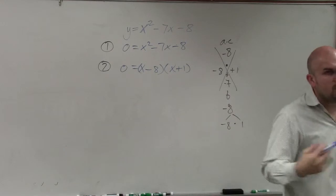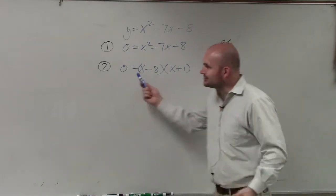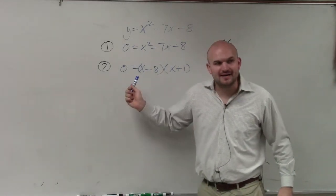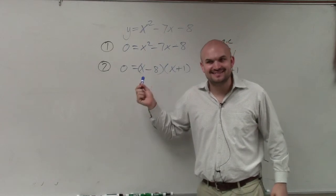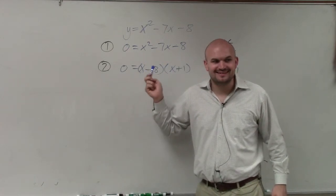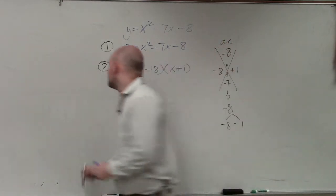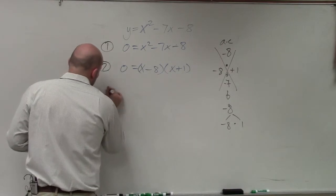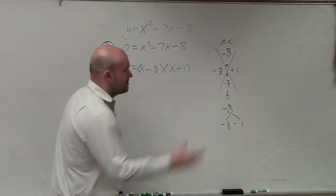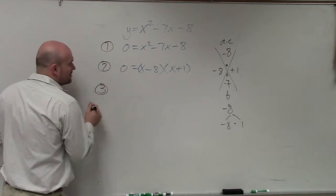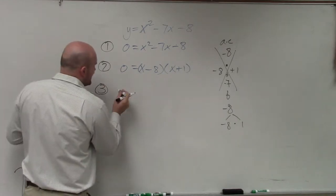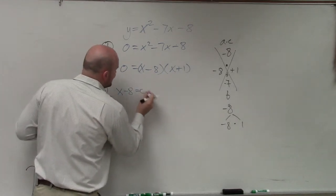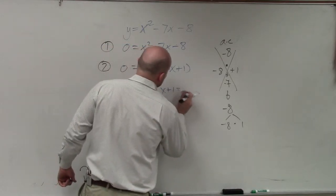And the reason why factoring was so important is because now, once it's factored, we can now apply the zero product property. So step three, step three was to apply the zero product property, which tells us to set each of these equal to zero.